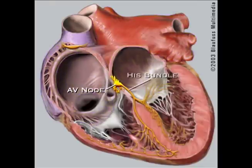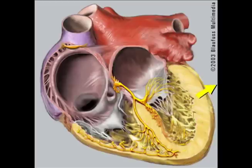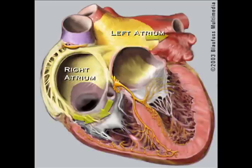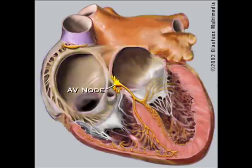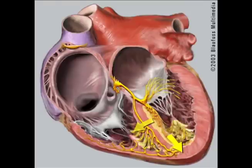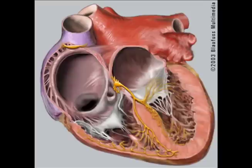It goes to the normal bridge between the top and the bottom chambers of the heart, called the AV node. This acts a bit like a toll bridge. Every time a signal gets there, it waits for a moment, and then the signal progresses down to the ventricle.